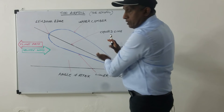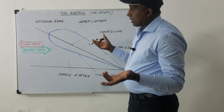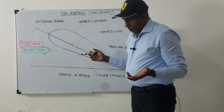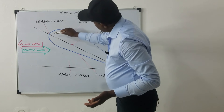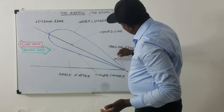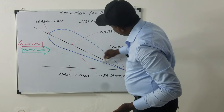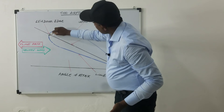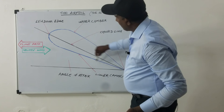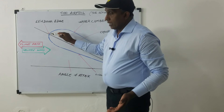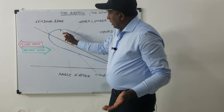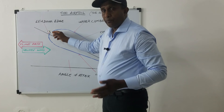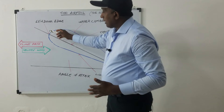This upper and lower shape of the airfoil is called the camber. The camber of an aerofoil is the curved surface of its upper and lower surfaces.